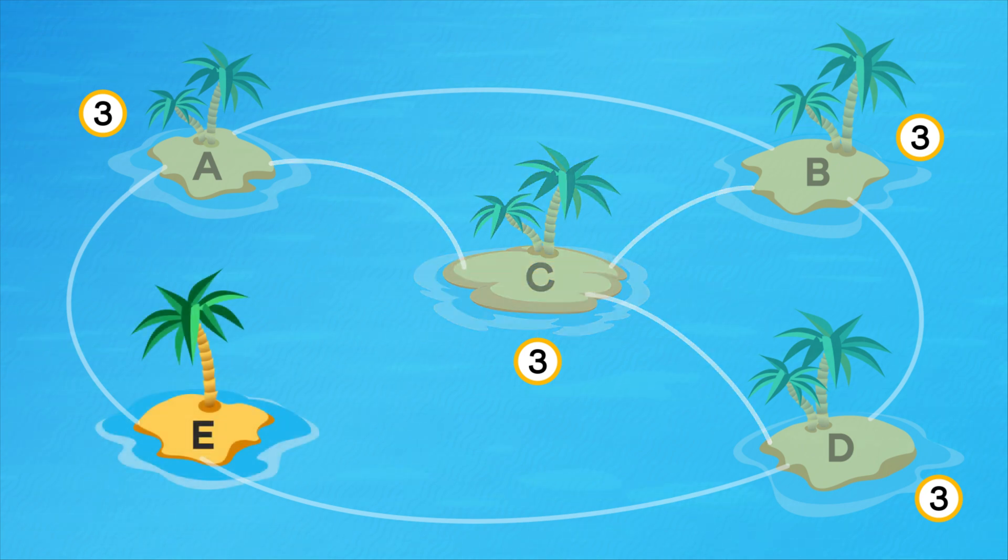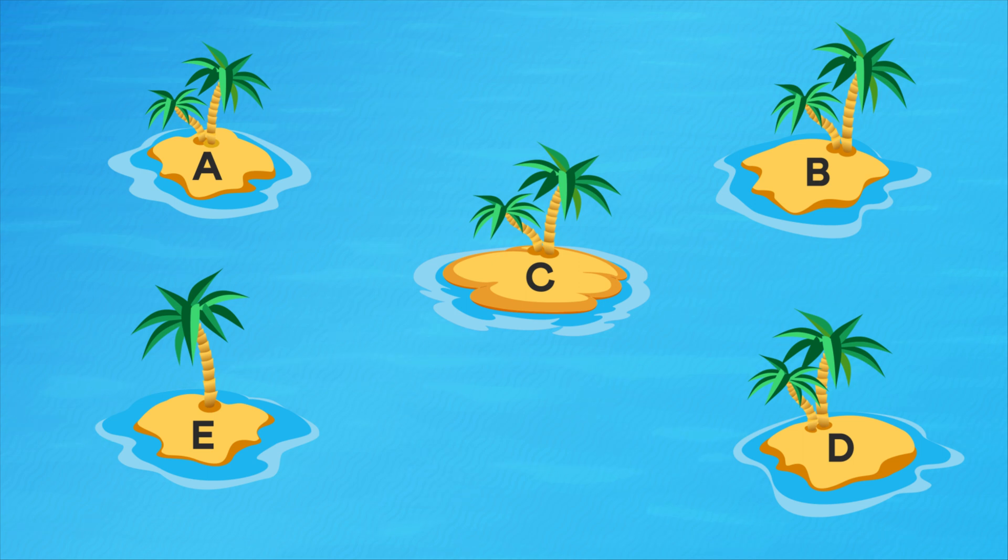Only island E is left with just 2 connections. If we try to connect it to any other island, their connections would increase as well, making them more than 3. So this didn't work. Is there another way? Why don't you try it out before watching ahead?